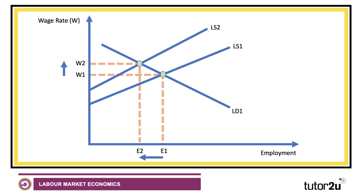Other things remaining the same — ceteris paribus — that would lead to rising wages and a fall in employment. Now, this would be a good diagram to use if you get a question on labour shortages.